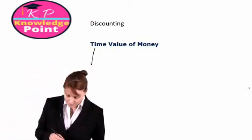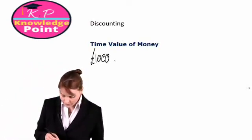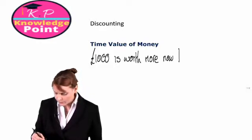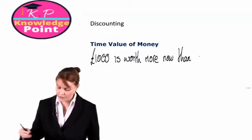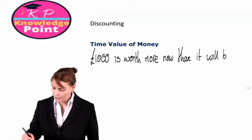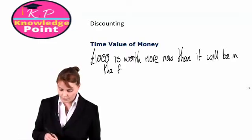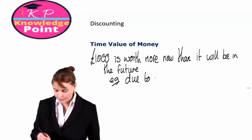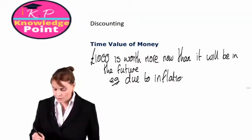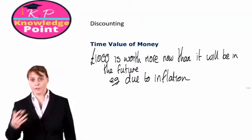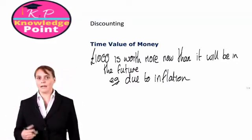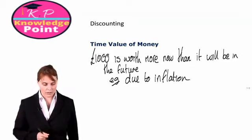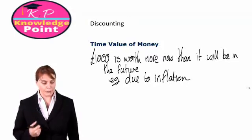We expect that £1,000 is worth more now than in two years or than it will be in the future. For example, due to inflation. If prices are going to go up in the future, then the value of £1,000 — so the amount we can buy with that £1,000 — is going to go down. This is called the time value of money.